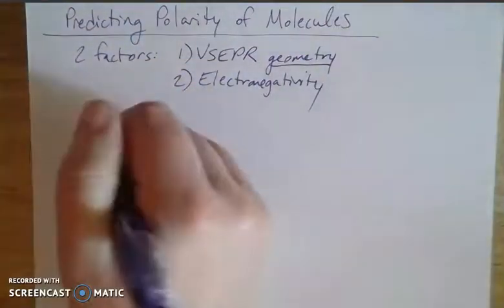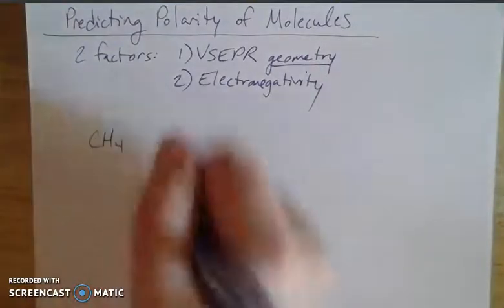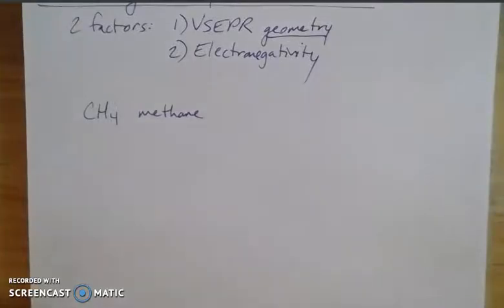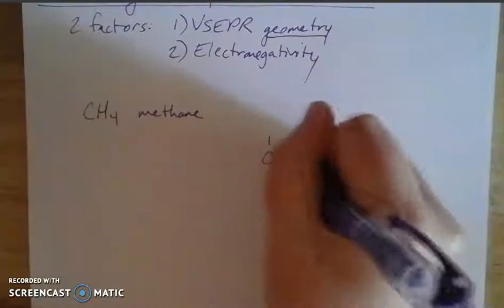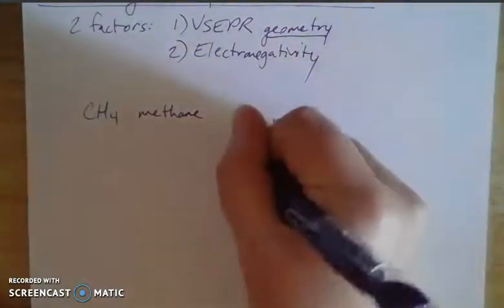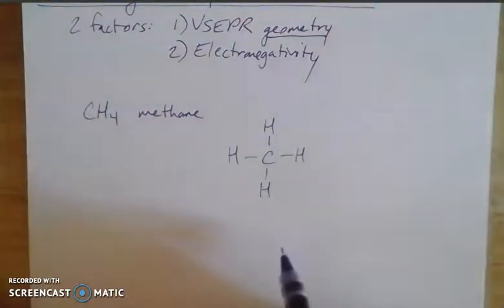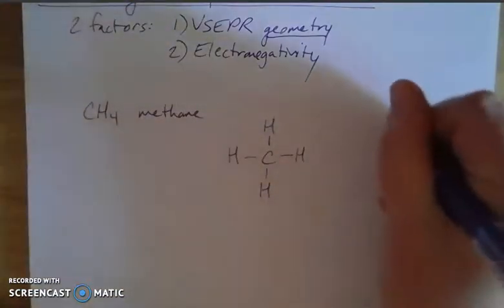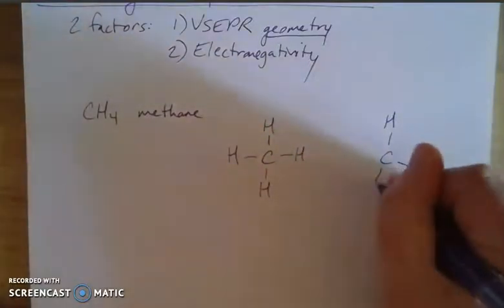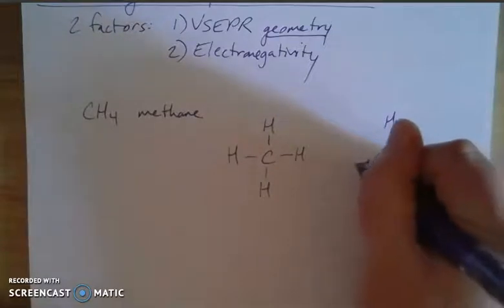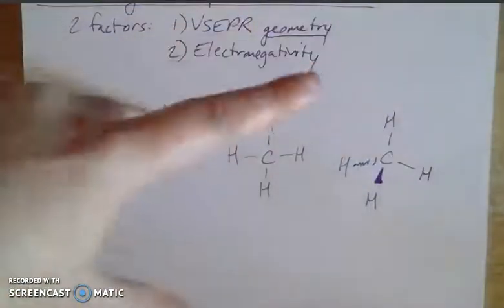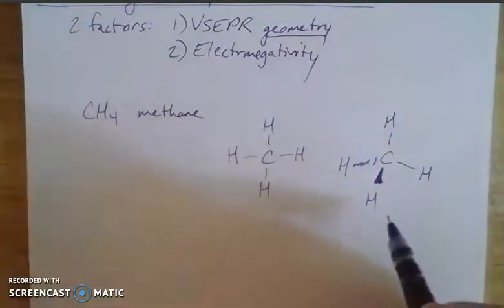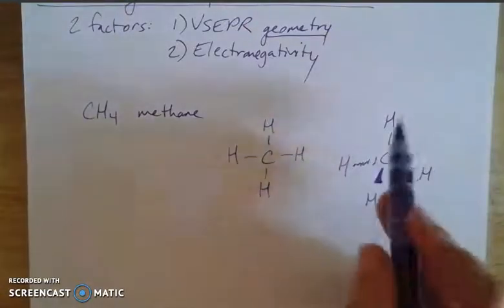The easiest case is something like methane, CH4, which is a component in natural gas. Carbon has four valence electrons and each hydrogen has one, so there are four places to bond. Looking at the VSEPR geometry, I have four electron groups around a central atom, which gives me tetrahedral geometry with those 109.5 degree angles — one hydrogen coming out at you and one going back into the page — giving that three-sided pyramid structure.